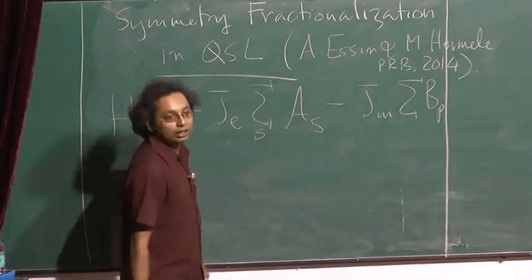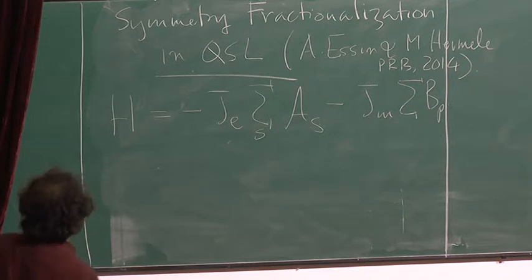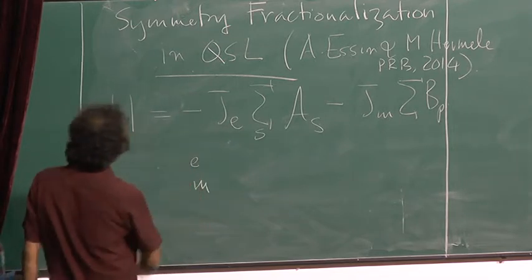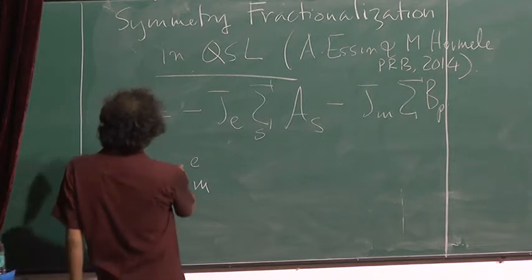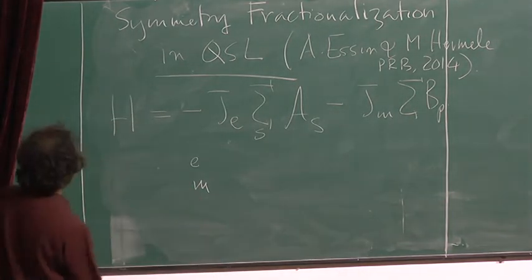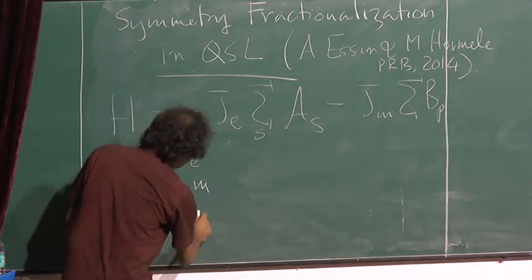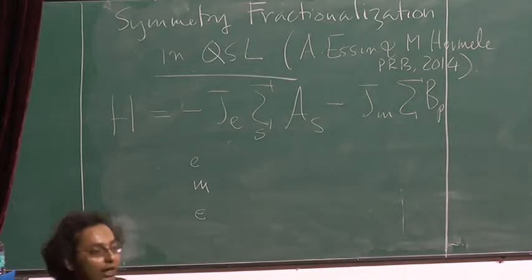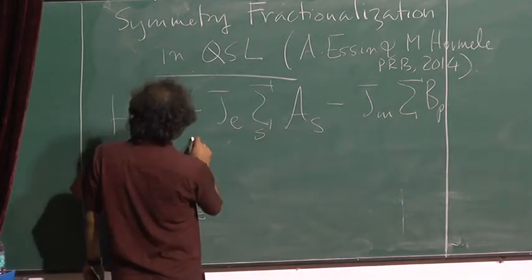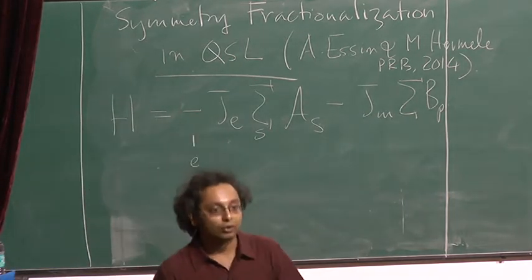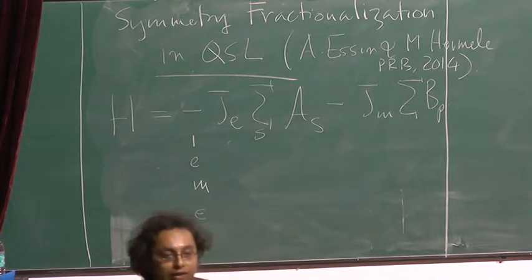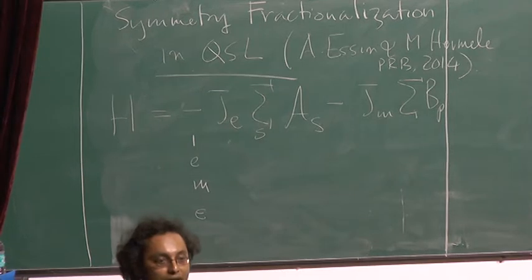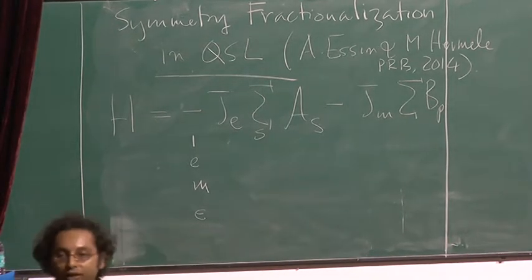Let me summarize a few things using a different language. We found that there are two types of primary excitations: the electric charge and the magnetic charge. We also found that they can form a bound state — these are bosons — and they can also form a bound state represented by epsilon, which is a bound state of electric and magnetic charges and is a fermion. To complete this, I need the identity, which is not an excitation at all — just the ground state, no excitations. This basically forms the four kinds of excitations, trivial or non-trivial, in this liquid phase at low energies.